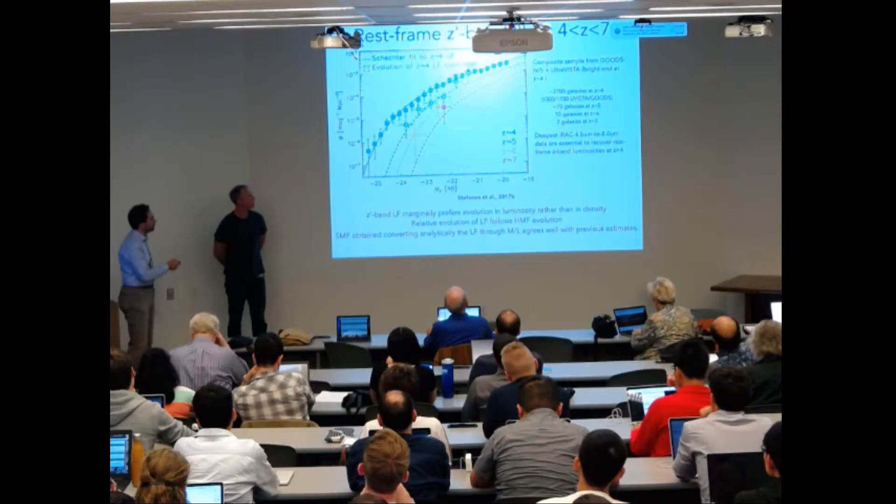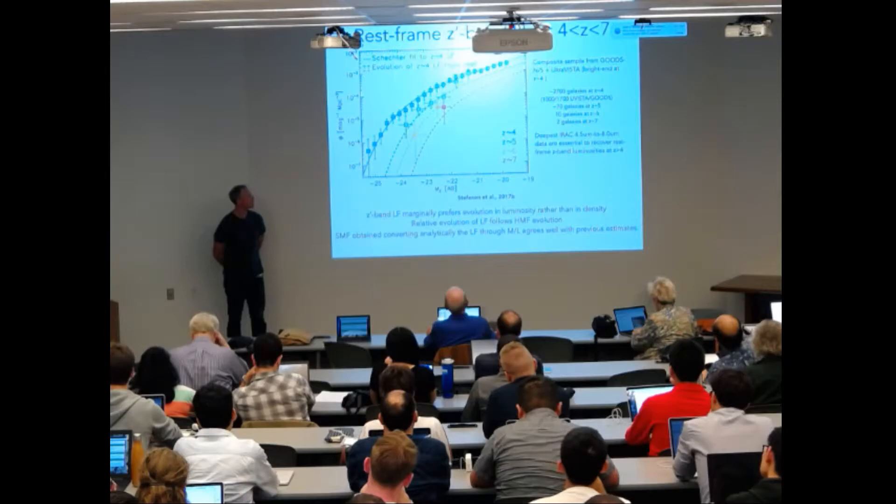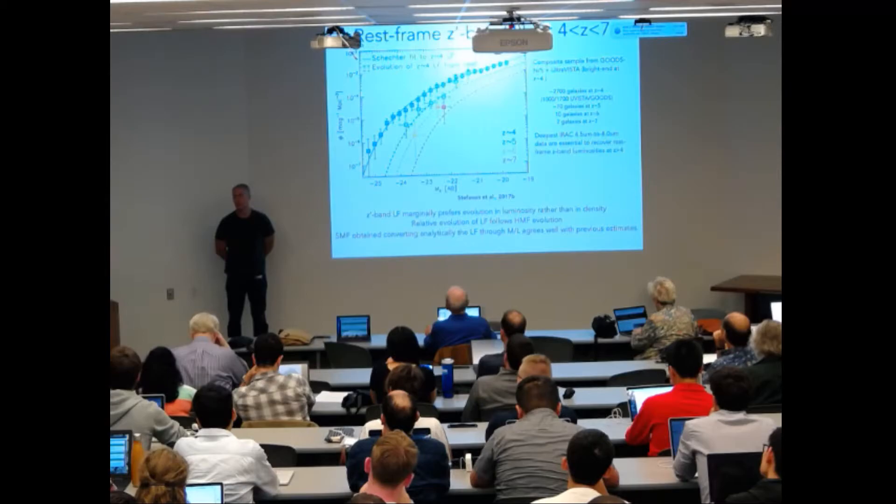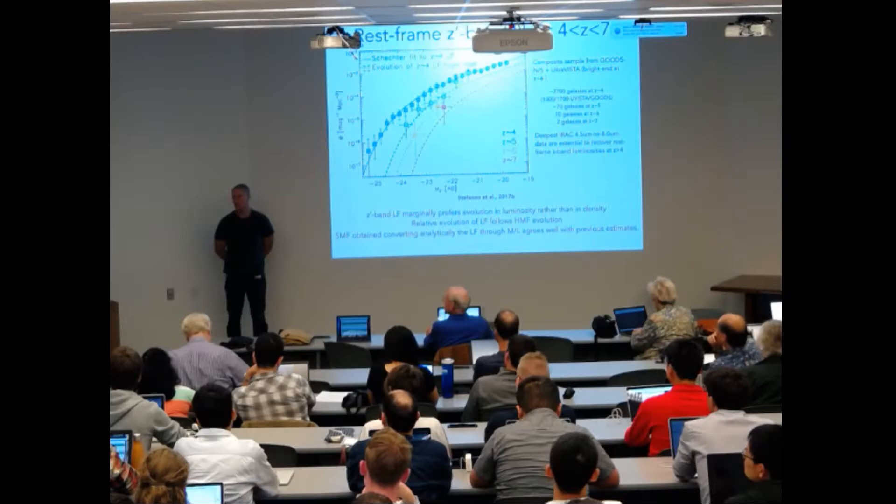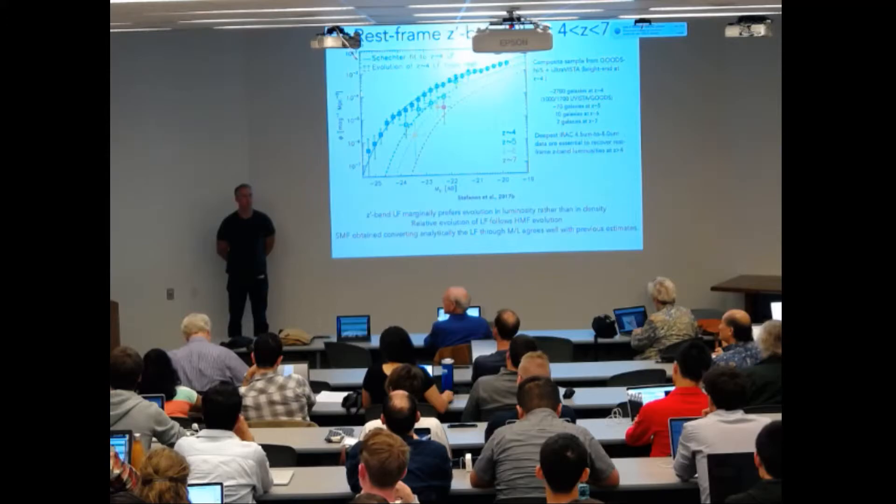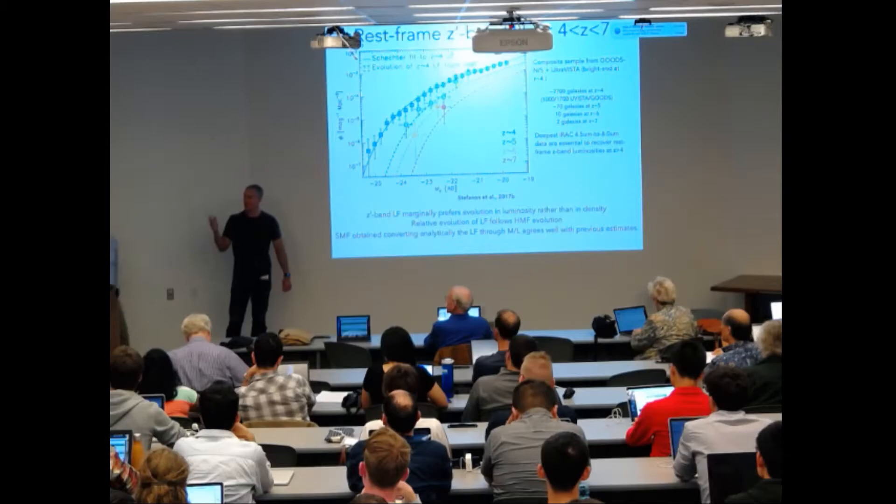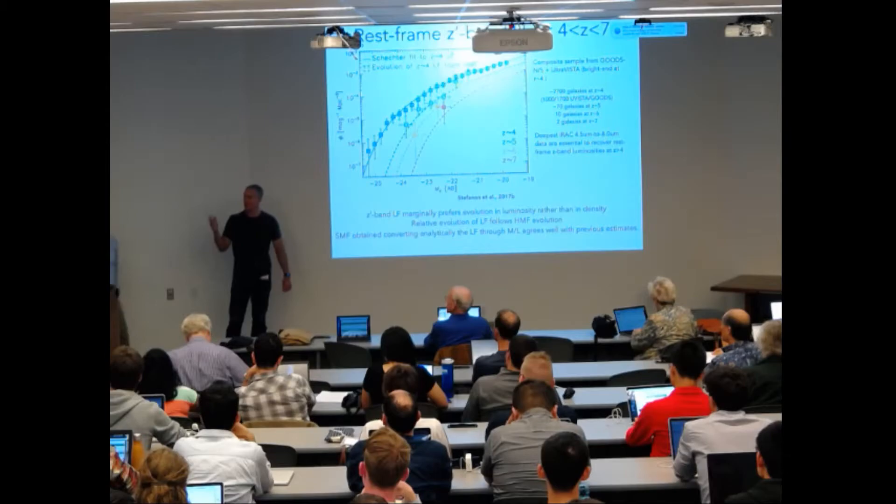Yeah, so the main reason I think is because the evolution of this luminosity function is marginally but better described by an evolution in luminosity rather than in number density. Usually for the UV luminosity function at high redshift, the evolution is mostly in the normalization factor, while here it's in luminosity, and luminosity correlates better with halo mass.